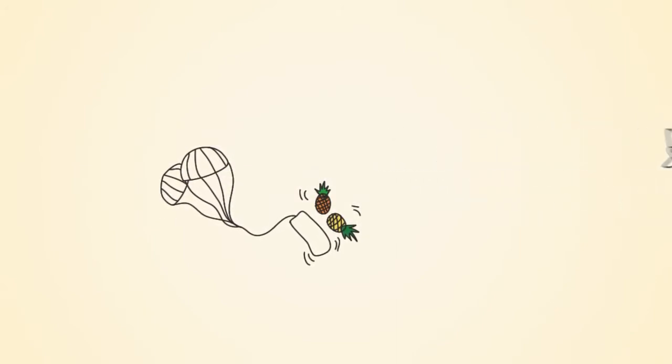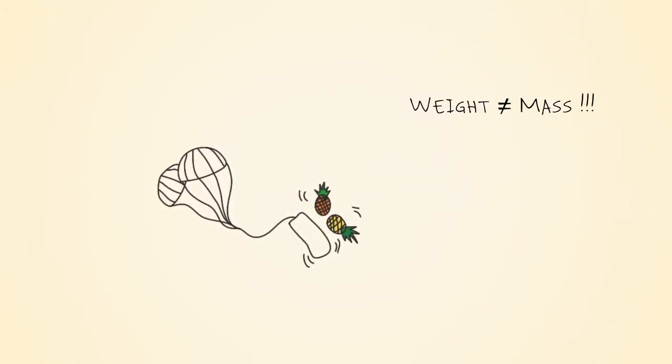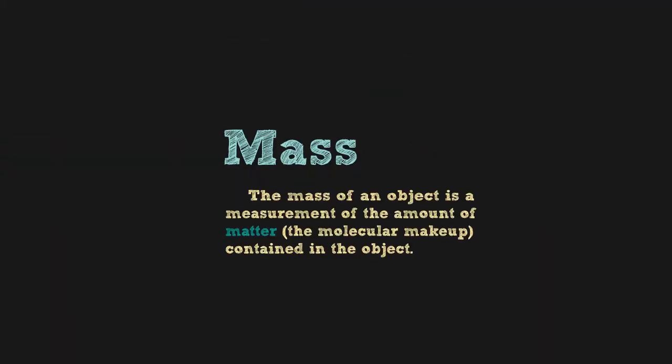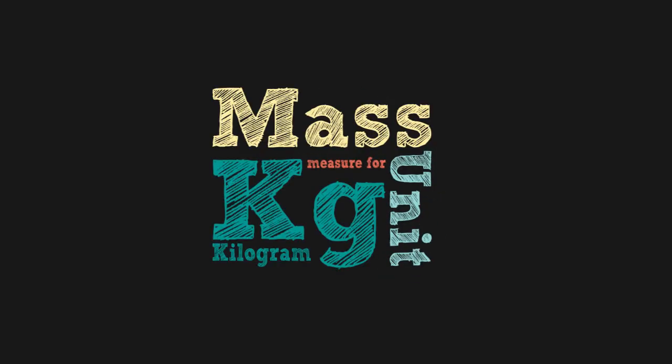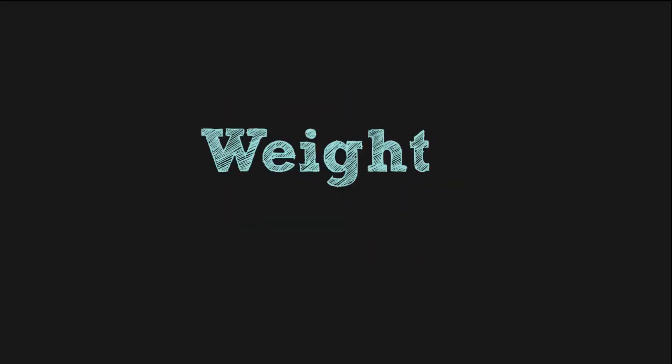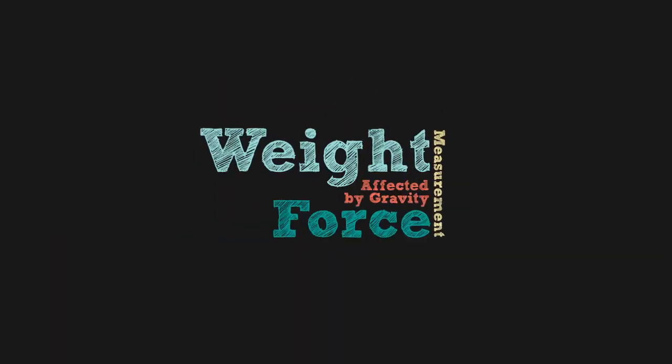It's important to recognize that weight and mass are not the same thing. The mass of an object is a measurement of the amount of matter, molecular makeup, contained in the object. The unit of measure for mass is the kilogram. Weight, however, is a measurement of force that is affected by gravity.